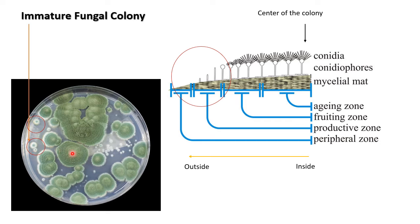And this one is a mature colony. You can see the whole colony has a green color from the conidia. You can make out the difference between the center of the colony and the peripheral zone. You will also get to observe the difference in mature conidia. This is how you differentiate between an immature fungal colony and a mature fungal colony.